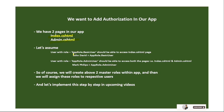We will create two roles: one is basic user and another is admin user. The user with the basic user role will be able to access only the index.cshtml page, and the user with the admin user role will be able to access both pages — index.cshtml and admin.cshtml. That is our requirement.